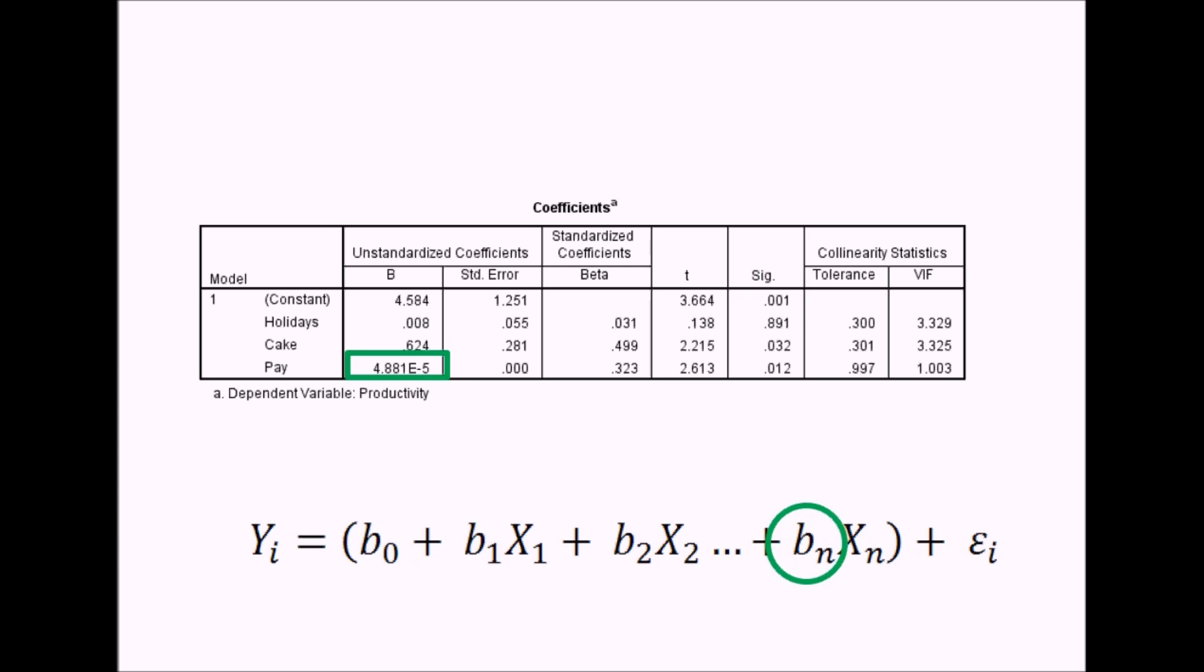Then the final one—and you could have as many of these theoretically as you wanted in a multiple regression—we've got pay, which is the b coefficient here, and that would be b3 in the equation. One thing you might notice about this coefficient is it's written slightly odd. It's got 4.881e-5. This is because the coefficient for this variable pay was actually really low, and it was so low that SPSS can't fit it into this table with the correct number of decimal places. The value for this was actually—I've calculated it here—0.00004881. This e5 is an indication that you move the decimal point five places to the left. But essentially, the point is it's a very low number, and there's a good reason for this.